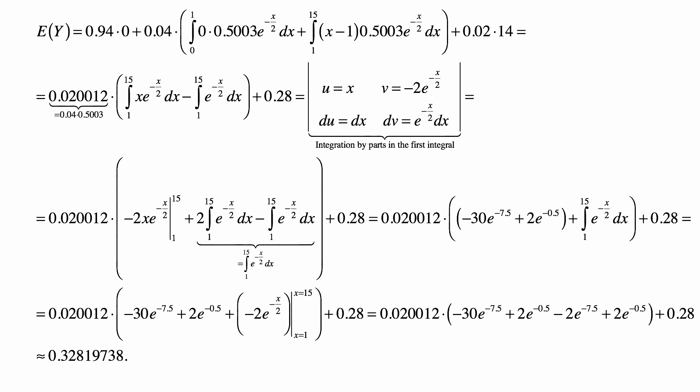So, all the terms with 0, the first two terms, really disappear, and we look only at the integrals that we have as a result. And I also express this X minus 1 times the density as X times the density minus 1 times the density. So, that's why it becomes a difference of two integrals.